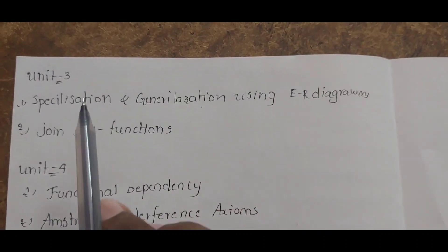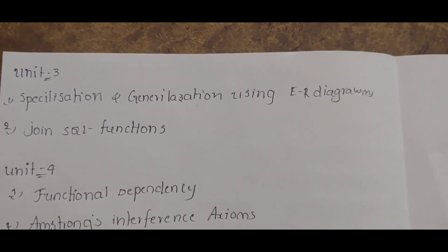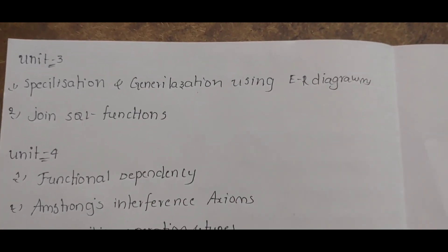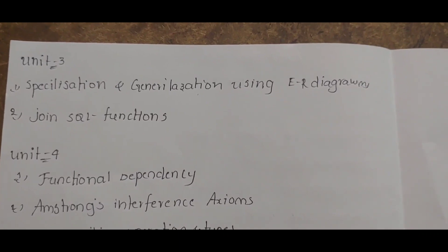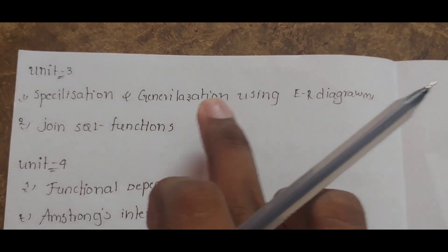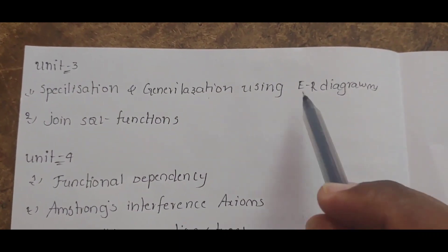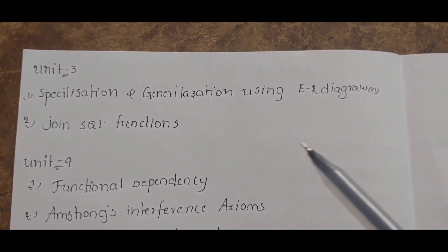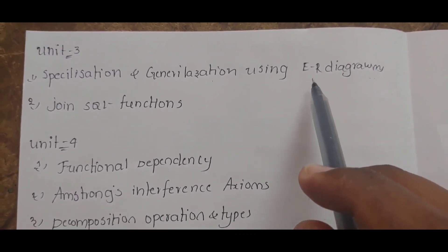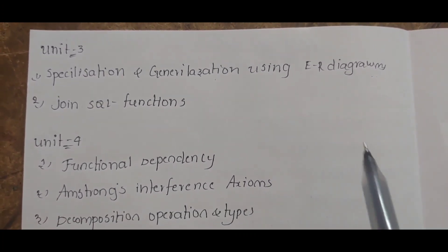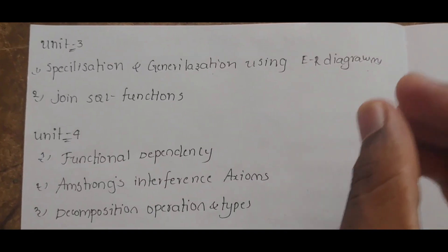Coming to Unit 3 — specialization and generalization using ER diagrams. The entity-relationship model is very important and scoring. Also, draw and explain JOIN, SQL functions — these are important for Unit 3. These are the most important questions for Unit 3.